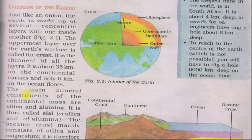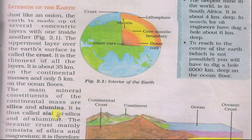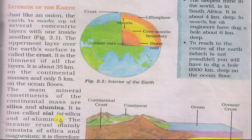The main mineral constituents of the continental mass are silica and alumina. Mahadweepiya sahiti mukhya roop se silica aur alumina se bane khanijoon se milkar bani hai. It is thus called SIAL — SI for silica and AL for aluminium.